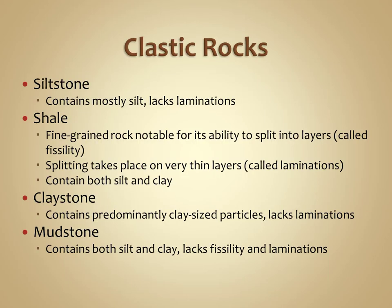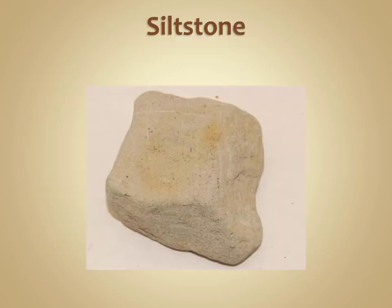Moving now to our smallest grain sizes — silt and clay — we differentiate our clastic rocks based upon whether it is silt-sized or clay-sized. If it is silt, we classify it as a siltstone, which is a massive rock that lacks any sort of internal layering or laminations. A claystone, on the other hand, is mostly made up of clay-sized particles and also lacks internal laminations.